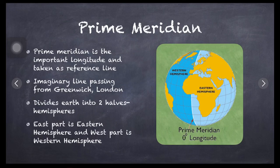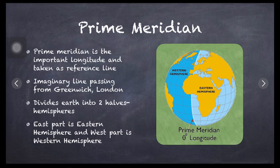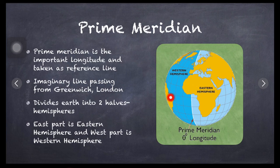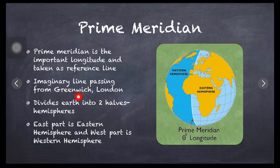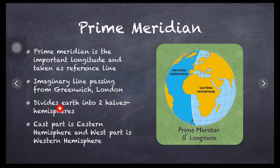Prime meridian is the most important longitude passing from the center of the earth. It is taken as the reference line to find out whether places are located to the eastern part of the globe or western part of the globe. Prime meridian is an imaginary line passing from Greenwich, London.